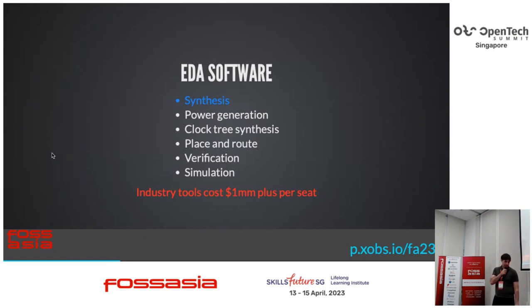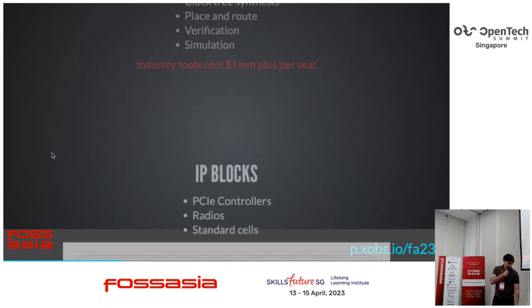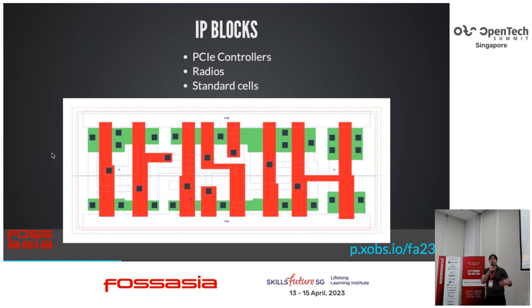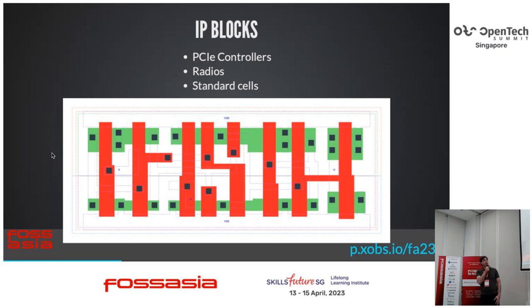Now I want to talk about synthesis, because that is the first step and the side of the tools that users most directly see. IP blocks are another thing you're going to need to build a chip. When you write a program, you go to NPM or Cargo and pick up a library. For example, if you want to do a JSON parser, you don't want to write one — you want to get a validated JSON parser that does what you want. In silicon it's the same way. We go to IP blocks, which are libraries of pre-vetted, pre-tested silicon blocks you can just drop on your chip.